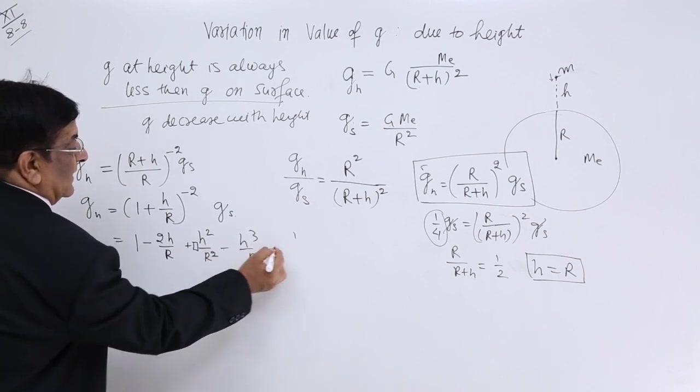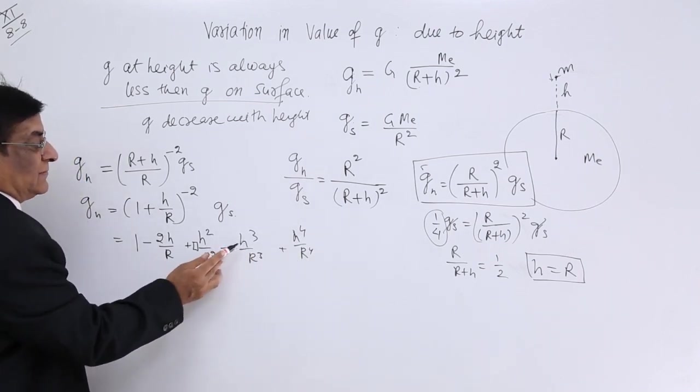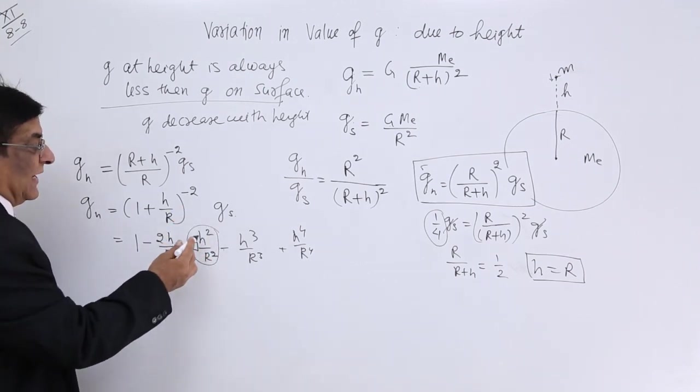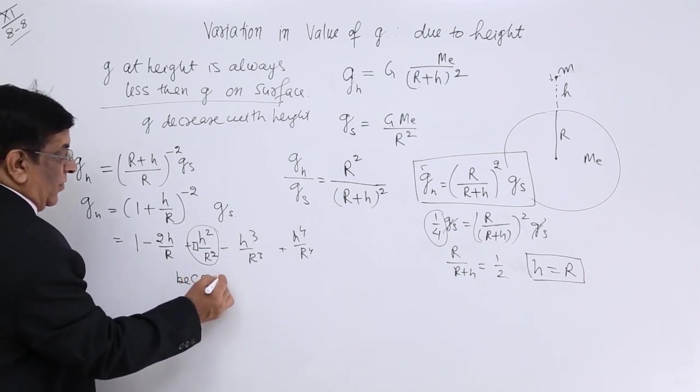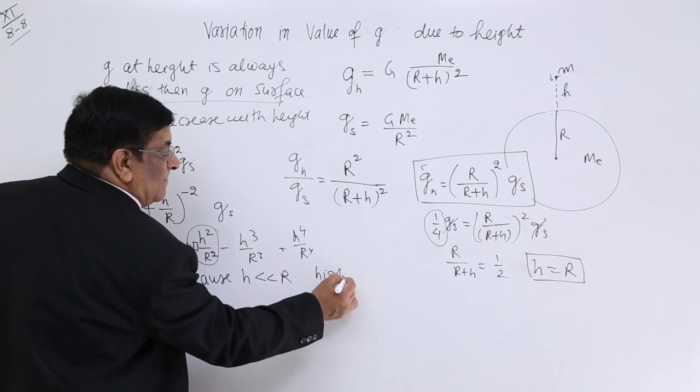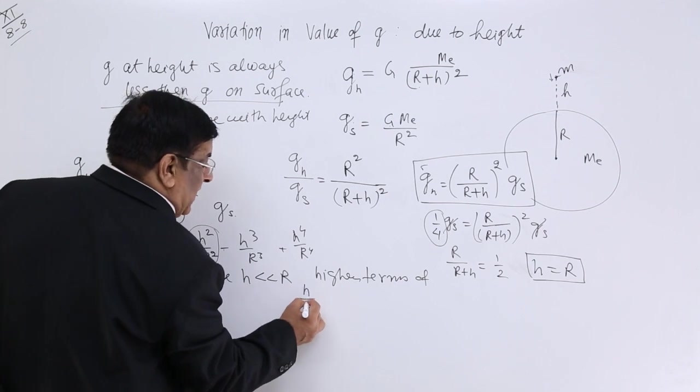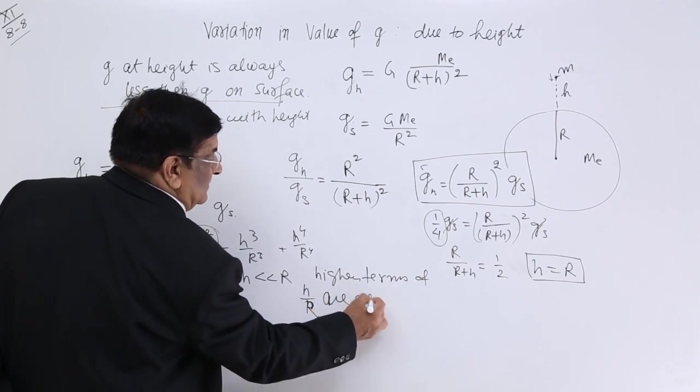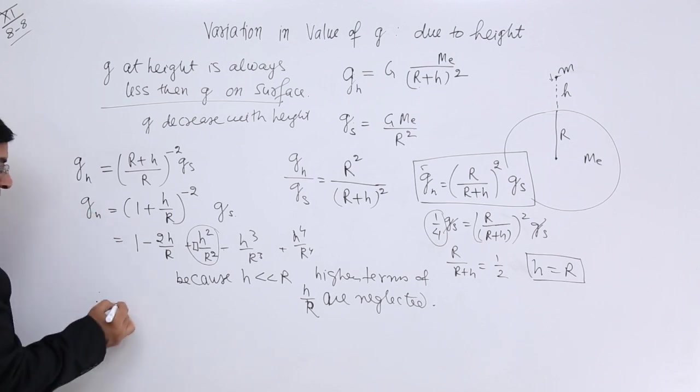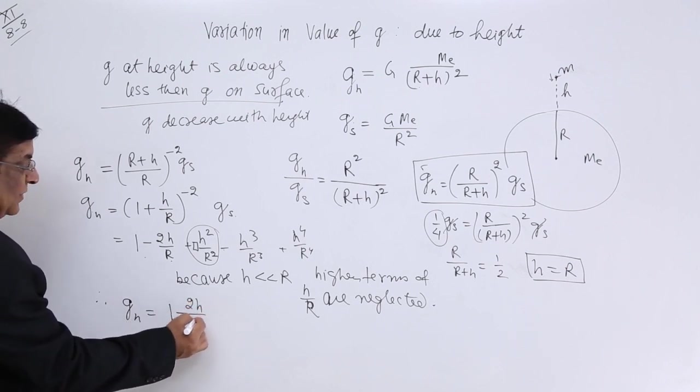Now this term and further terms, in all these terms, H is very small compared to R. So small compared to R that this whole quantity does not mean anything. We can neglect it. Because H is very small compared to R, higher terms of H upon R. Therefore g_h is equal to only two terms: one minus 2H upon R.